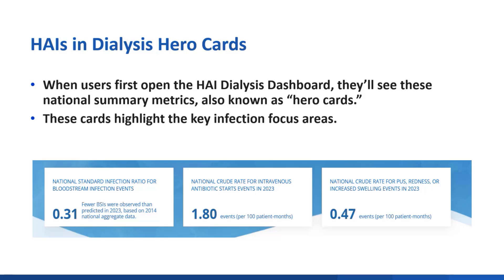The next HERO card is for the rate of IVAS in 2023, which is 1.80 per 100 patient months. This is down from 2.35 per 100 in 2019. And finally, the last HERO card is for PRS, and that rate is 0.47 per 100 patient months, showing a slight reduction from 0.50 in 2019.